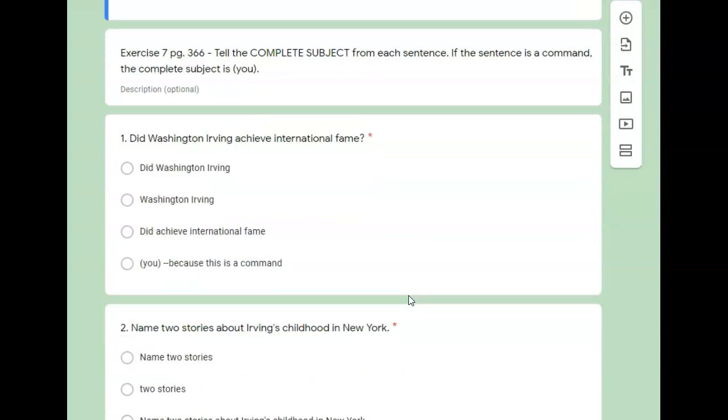So there's two sections to 8.4. In exercise seven, we're going to go through three questions for each section. Exercise seven, you're dealing with the complete subject. So who or what the sentence is about and complete means all of the words dealing with that subject.